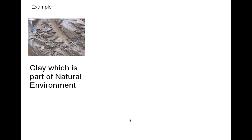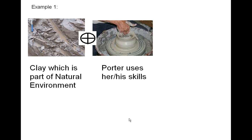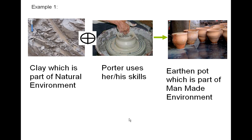Example one: clay, which is a part of natural environment — a potter uses their skills to create earthen pots, which are a part of man-made environment. So clay from natural environment is transformed through skill into earthen pots that belong to man-made environment.